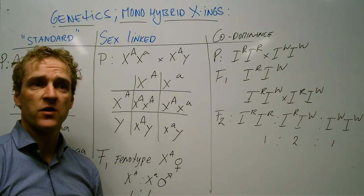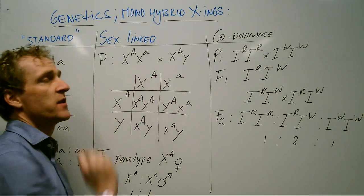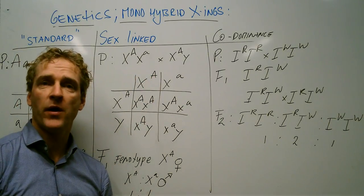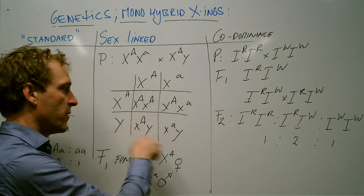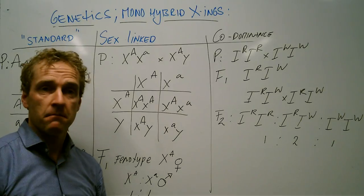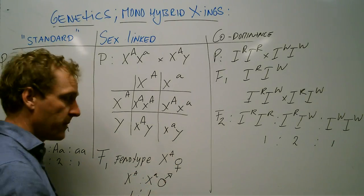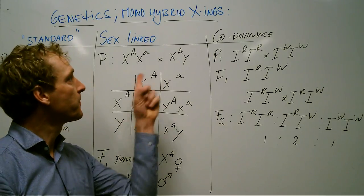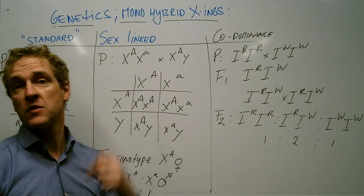If the question was for example what chance does this couple have of getting a boy that is colorblind, you can see we're narrowing down the options. These are the boys so 50 percent. Look at the phenotype, very important in answering questions about sex-linked traits.